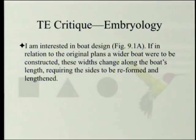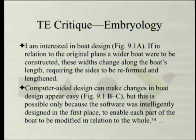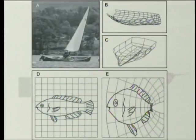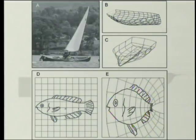The author illustrates this with boat design in Figure 9.1a. If a wider boat were to be constructed, widths change along the boat's length, requiring the sides to be reformed and lengthened. Computer-aided design can make changes in boat design appear easy, but this is only possible because the software was intelligently designed in the first place to enable each part to be modified in relation to the whole. Similarly, modifications to a fish are shown the same way — though the circular eye has been distorted and will have to be reformed.